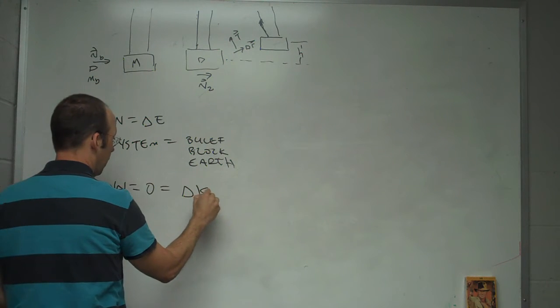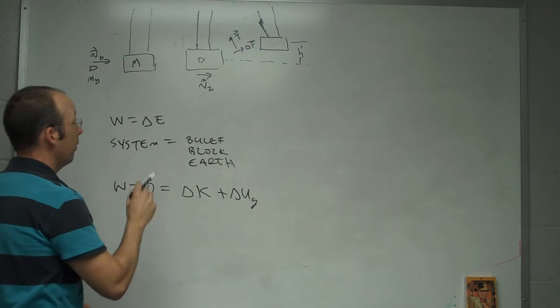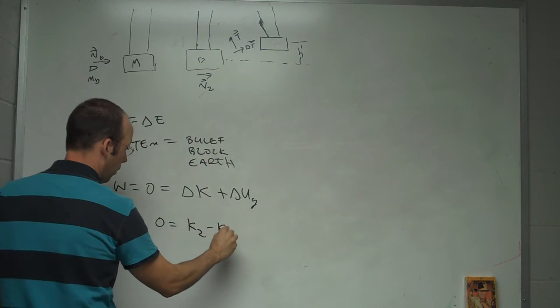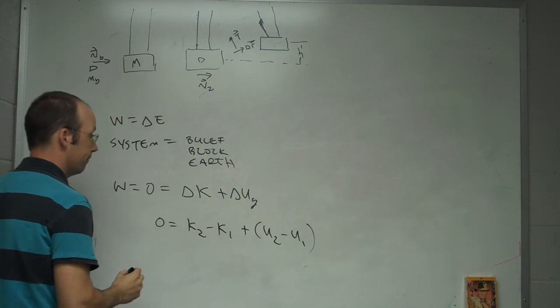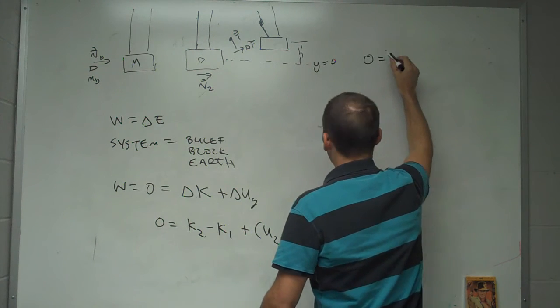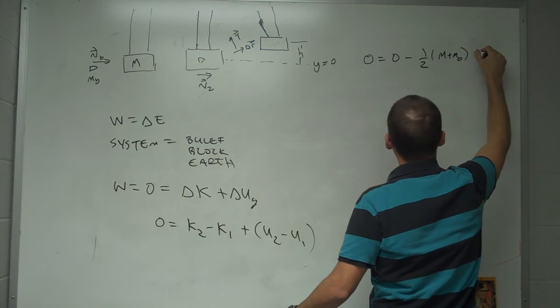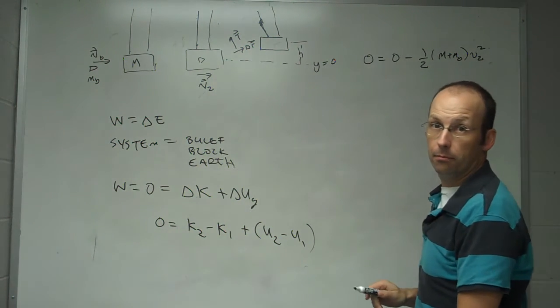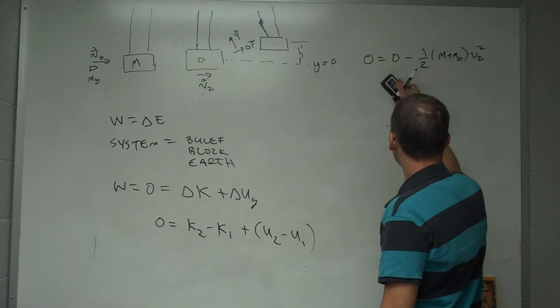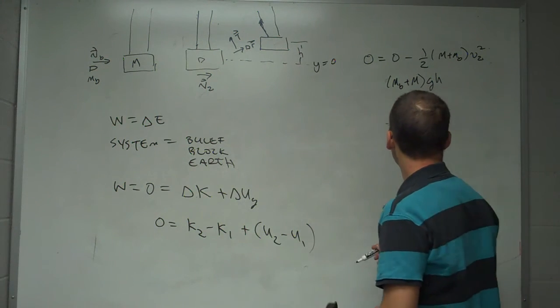So I have change in kinetic plus change in gravitational potential. So at part two, that's my final. What's the kinetic energy? It stops. When it gets to the highest point, it stops. So I'm going to say zero equals K2 minus K1 plus U2 minus U1. So let's just put in the things that we know. Let's call this Y equals zero. So then I have zero equals K2 is zero minus K1, one half, M plus MB, V2 squared. I didn't leave enough room for planning on my part. I'll put it down next. U2 is going to be MB plus MGH and then U1 is zero.